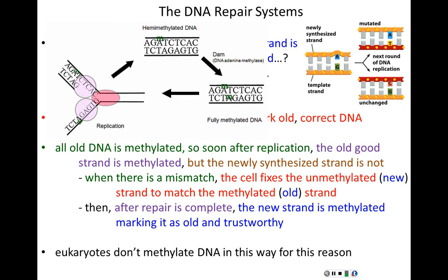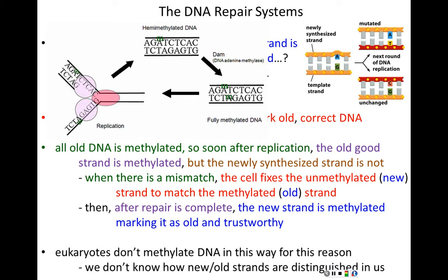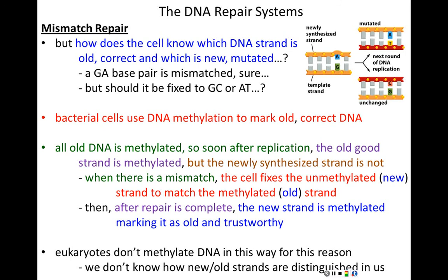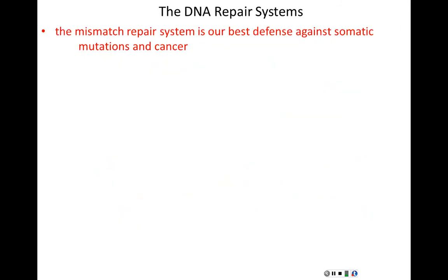Eukaryotes like us don't methylate DNA in this way — we methylate DNA for completely different reasons. To this day, we still have no idea how our cells tell new strands from old strands. They're not doing it through methylation, yet mismatch repair occurs in our cells and it always occurs correctly. Mismatch repair is our best defense against incorporating errors made by DNA polymerase, meaning it's our best defense against somatic mutations which can lead to cancer.